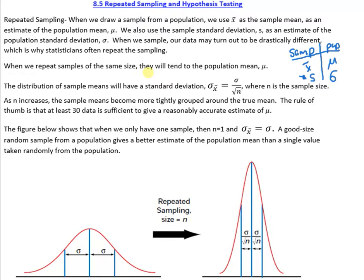And when we sample, our data may turn out to be drastically different, and this is why statisticians often repeat the sampling method.